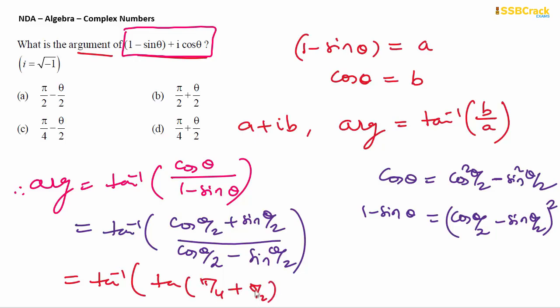You can see tan of pi by 4 plus theta by 2. This expression, if you divide the numerator and denominator by cos theta by 2, you will get tan of a plus b formula, where you can get a value of pi by 4 and b value of theta by 2. So now tan inverse of tan cancelled, so you will get pi by 4 plus theta by 2, which is the argument of the given complex number.